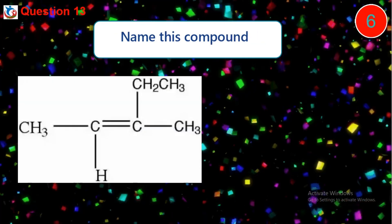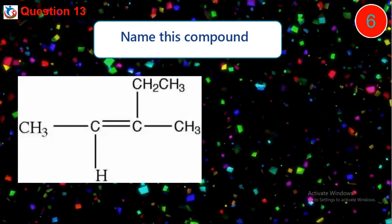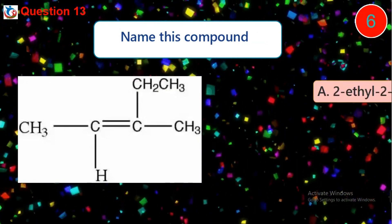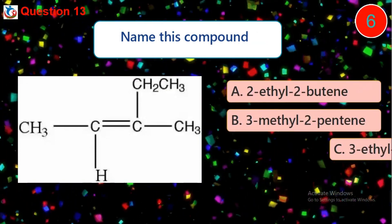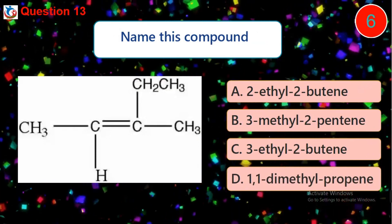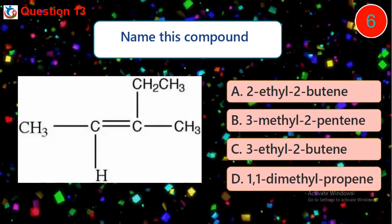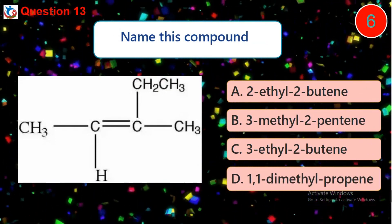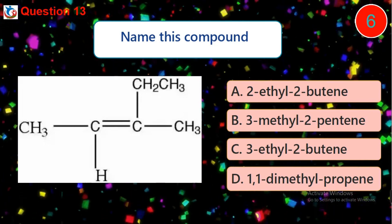Question 13. Name this compound. A. 2-ethyl-2-butyne. B. 3-methyl-2-pentyne. C. 3-ethyl-2-butyne. D. 1,1-dimethyl-propene.